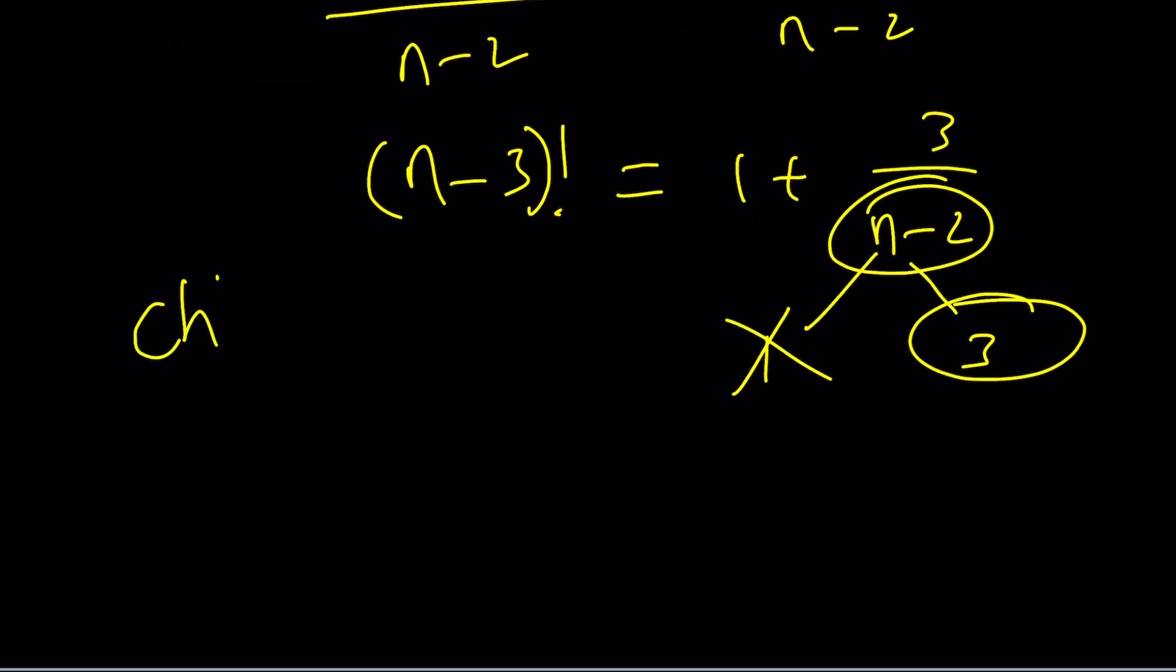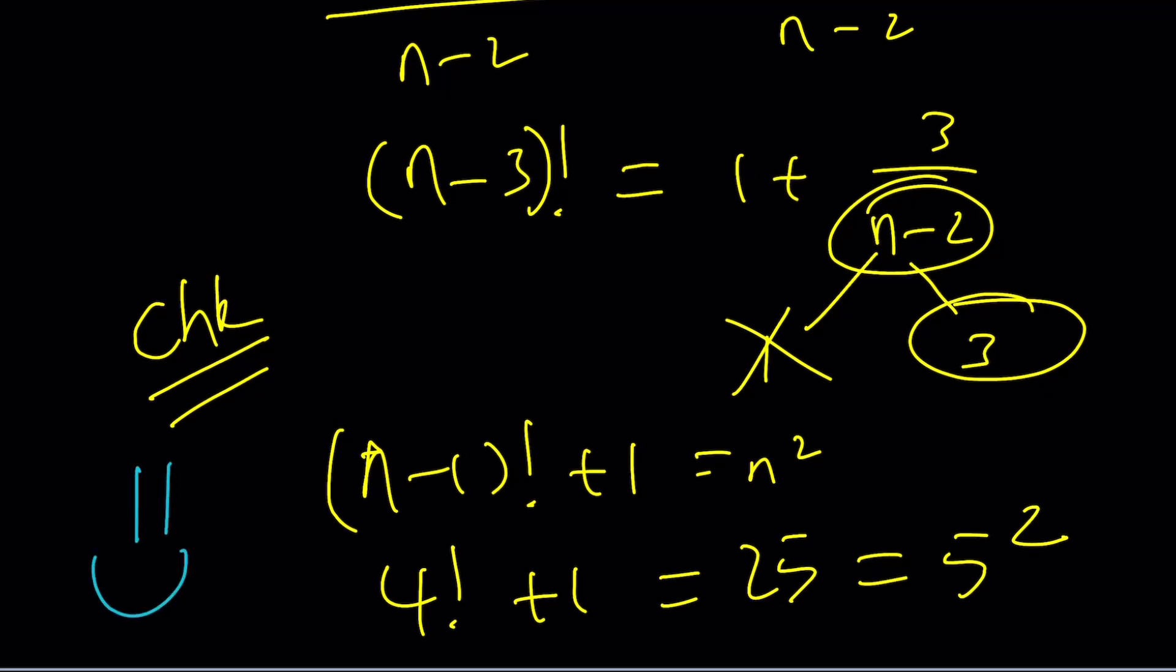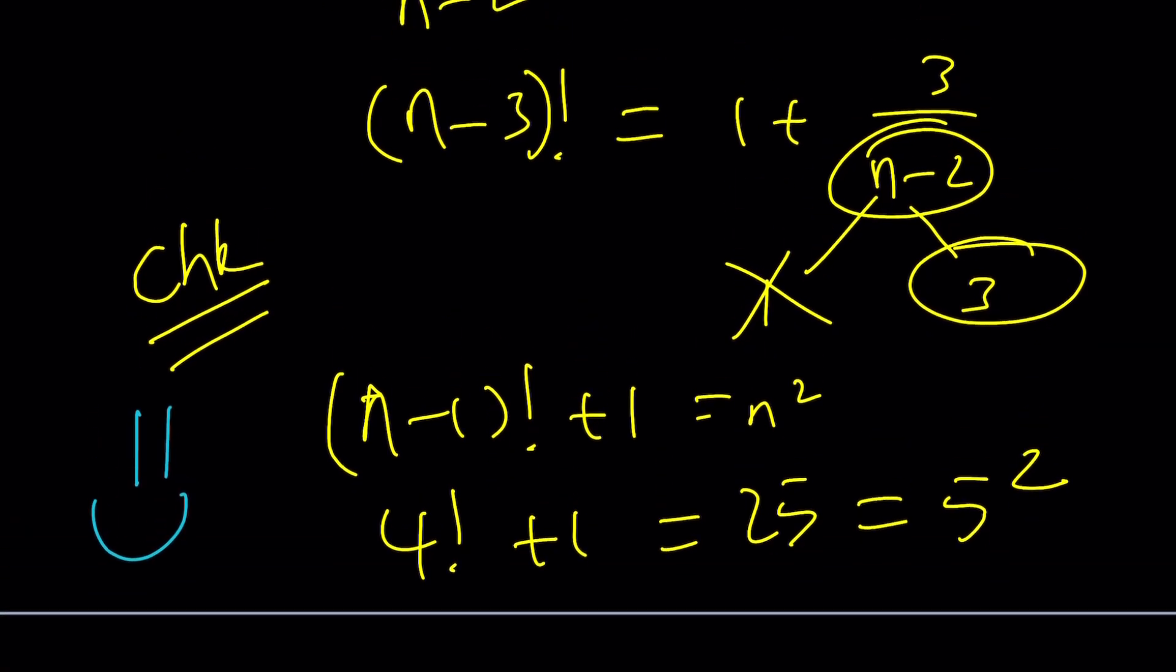And now, we can go ahead and check our work, actually. If you remember the original equation, I've written it so many times. If n is equal to 5, 4 factorial plus 1 is 25 and that's actually 5 squared, which means we have a match. Houston, we have a solution. And this brings us to the end of this video.